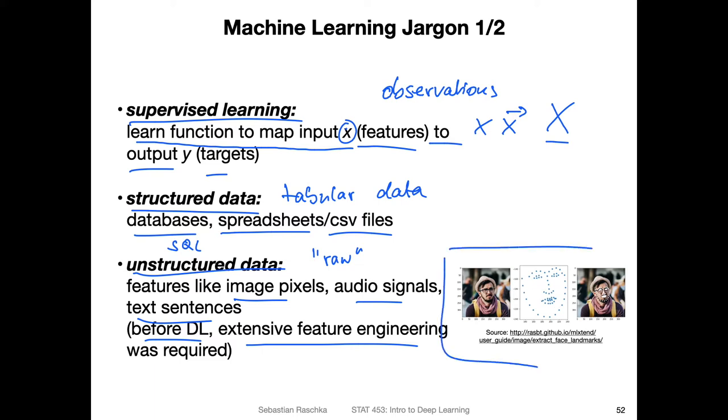So here on the right hand side, I just wanted to show you another example of raw image input versus something that requires feature engineering. For example, here you have a portrait image and let's say the task is face recognition, where you want to match multiple faces. Here I don't have multiple people where we want to compare whether it's the same person or not, so we don't have really face recognition matching.